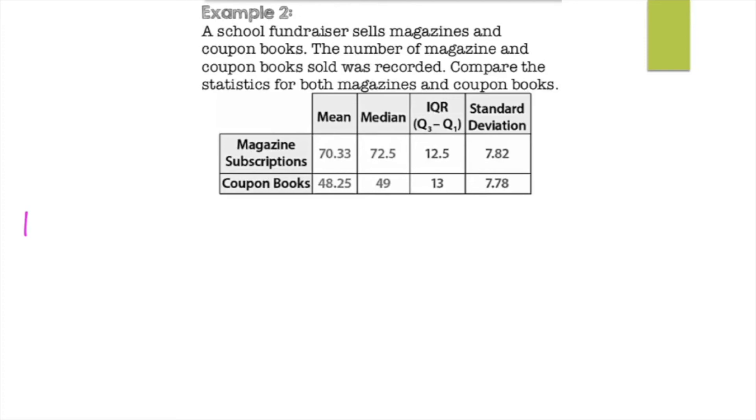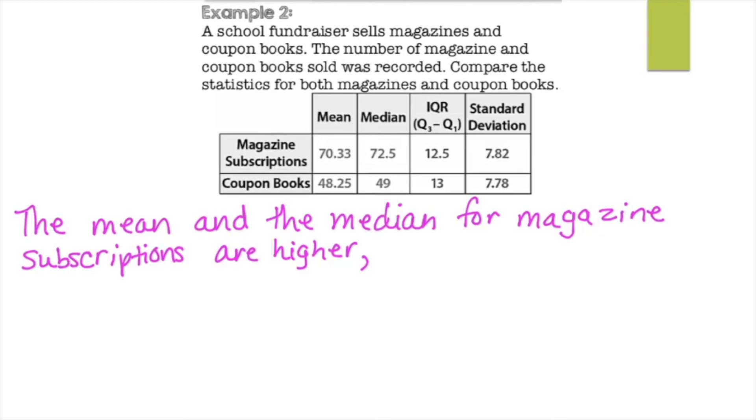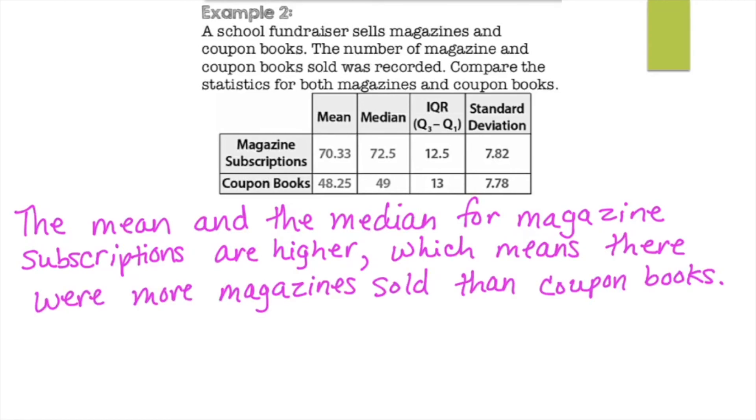And your IQR are about the same and your standard deviation are about the same. So when you have a mean and a median that are significantly higher, so the mean and the median for the magazine subscriptions are higher, that means there were more magazines sold than coupon books.